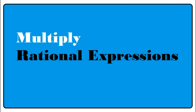To multiply rational expressions, multiply the numerators together and multiply the denominators together. In multiplying rational expressions, you can either multiply then simplify, or simplify then multiply.